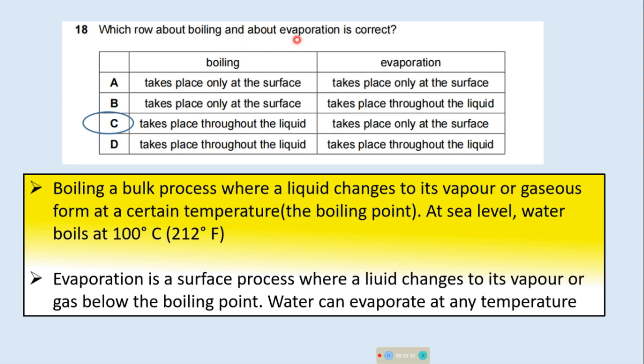Which row about boiling and about evaporation is correct? Boiling is a bulk process where a liquid changes to its vapor or gaseous form at a certain temperature. This certain temperature is called the boiling point. At sea level water boils at 100 degree centigrade. Evaporation is a surface process where a liquid changes to its vapor or gas below the boiling point. Water can evaporate at any temperature. Option C says for boiling takes place throughout the liquid, it is a bulk process, and for evaporation takes place only at the surface. So option C tells you the right story here.